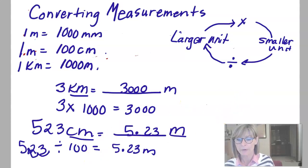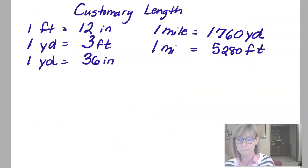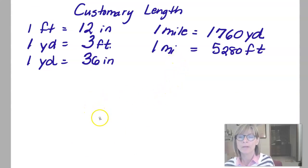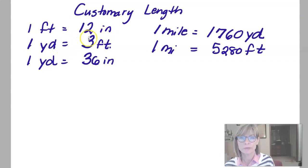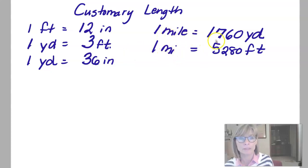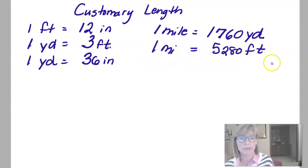Let's try a few customary problems. In customary length, we're talking about units like feet, inches, miles, and yards. Here are our equivalencies: a foot is 12 inches, a yard is 3 feet, a yard is 36 inches. You might not know that a mile is 1,760 yards or that a mile is 5,280 feet, but we would use these when we are converting.